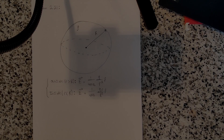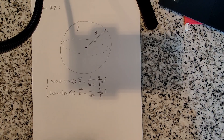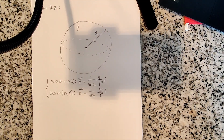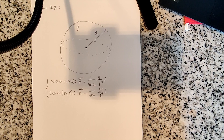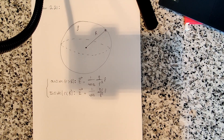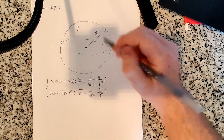Hello everyone. Welcome to David Griffith's Electrodynamics. This is problem 2.21 in the book. The problem says to find the potential inside and outside a uniformly charged solid sphere whose radius is capital R and whose total charge is little q. Use infinity as your reference point, and then after finding the potential, compute the gradient and check that it yields the correct electric field. Also sketch a graph of the potential as a function of the distance from the center, r.